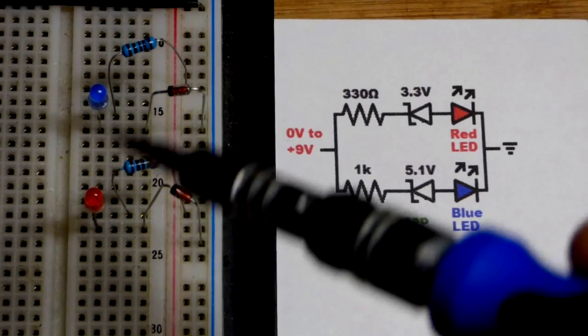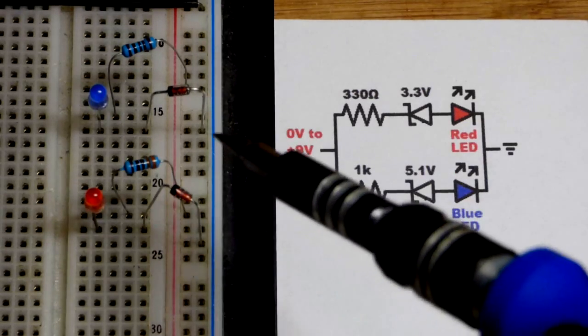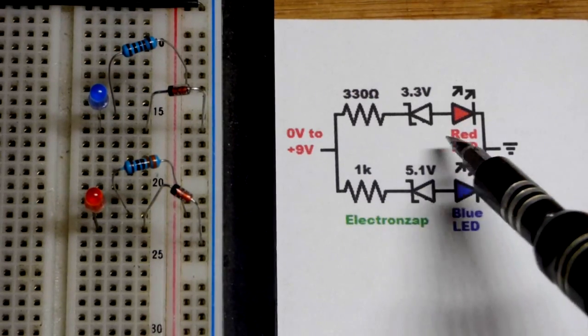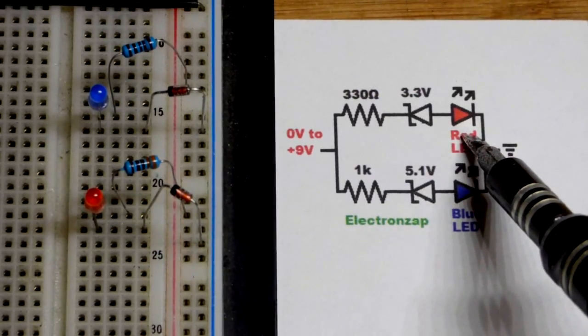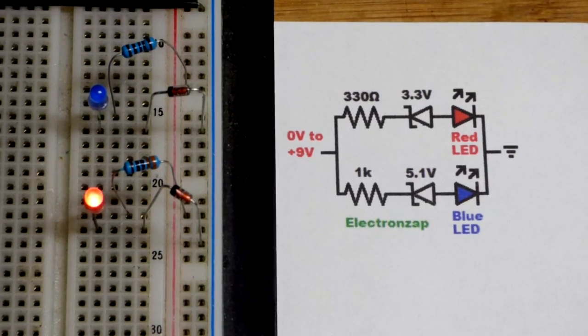So now in this video we have a couple LEDs here wired in parallel. The voltage is going to go across both them independently. The red LED is going to start lighting up when the voltage gets high enough before the blue LED.